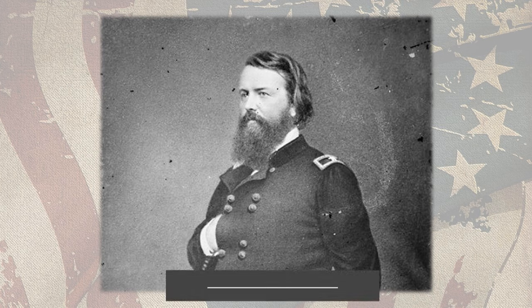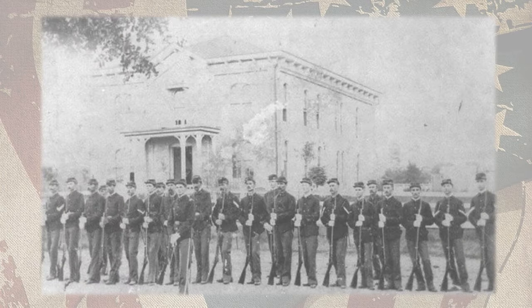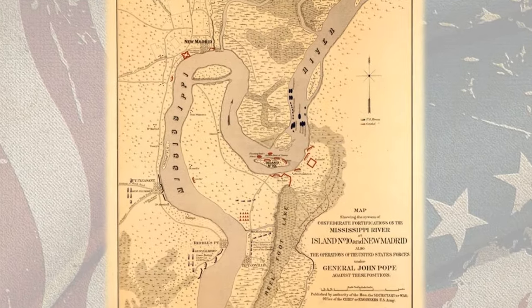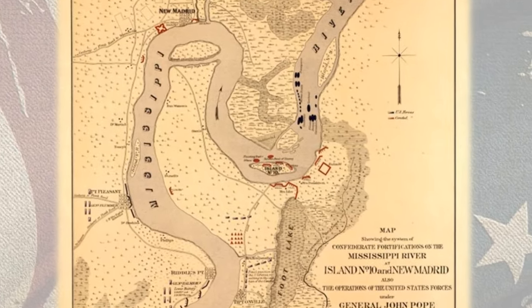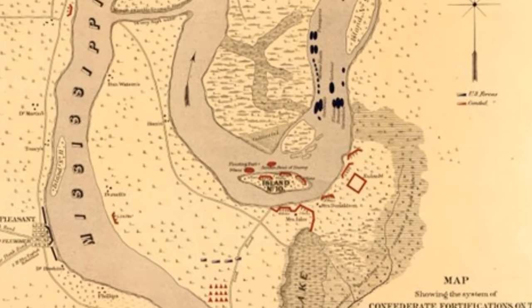When Stanley returned to active duty, officials placed him in command of the 1st Division of Major General John Pope's Army of the Mississippi. Stanley's small division was made up of four Ohio regiments — the 27th, 39th, 43rd, and 63rd Ohio Volunteer Infantries. Under Pope's command, Stanley's division took part in Union operations at New Madrid and Island No. 10, which helped secure federal control of the Mississippi River down to Fort Pillow in Tennessee.